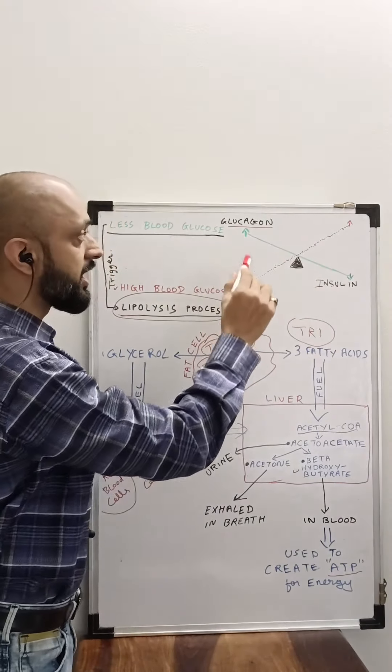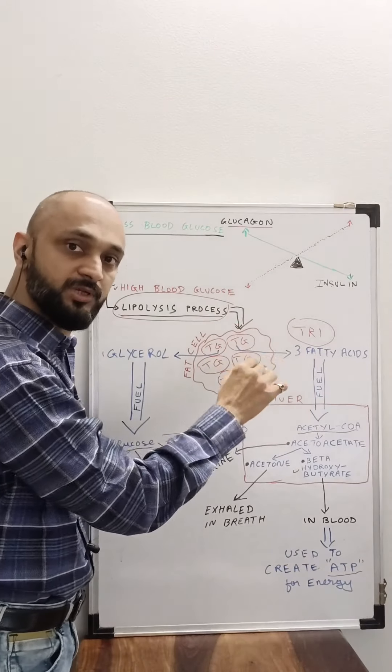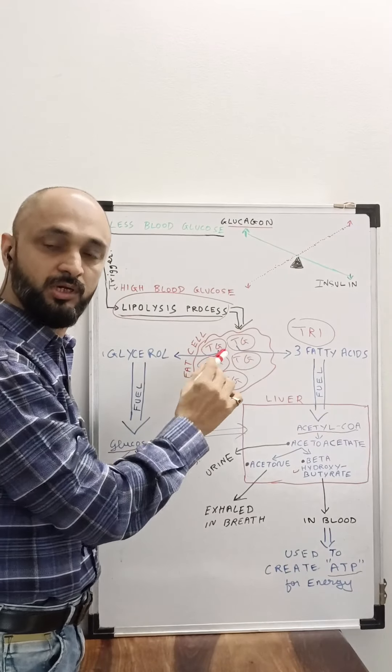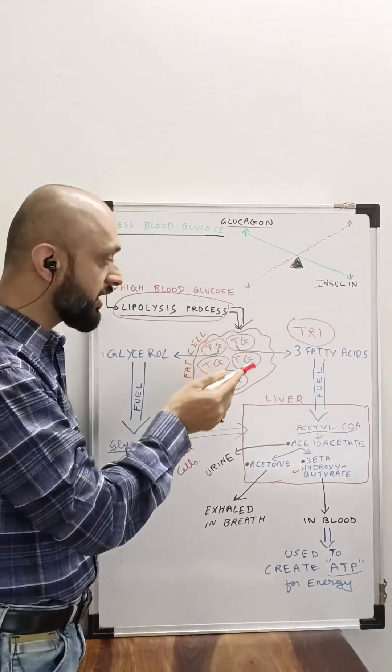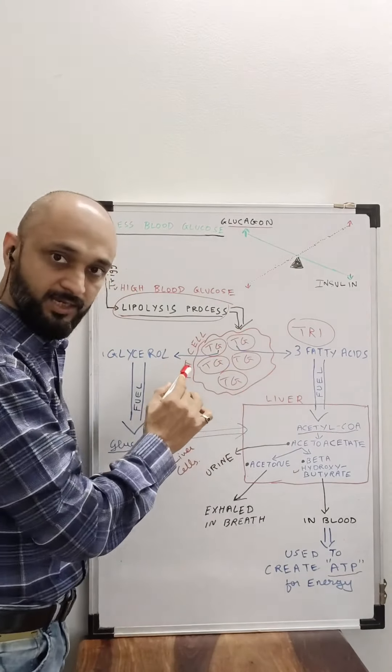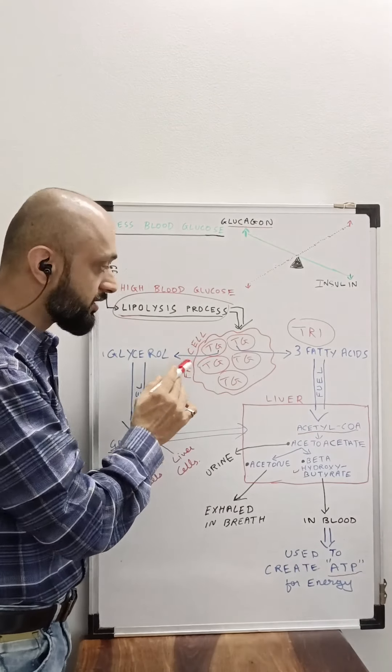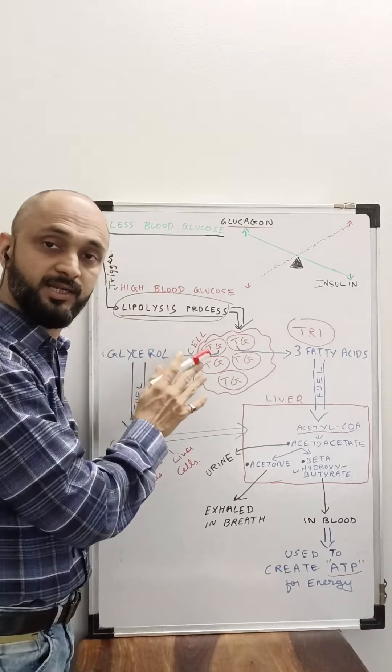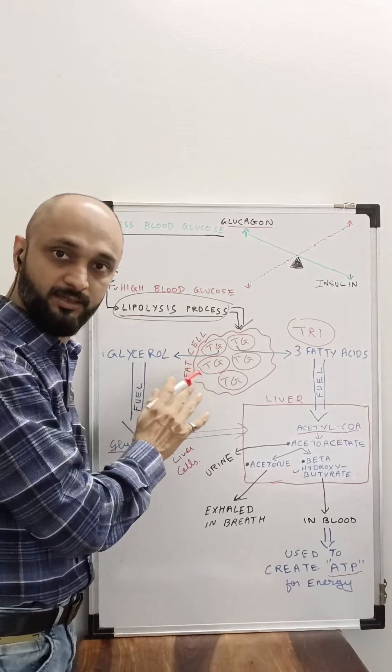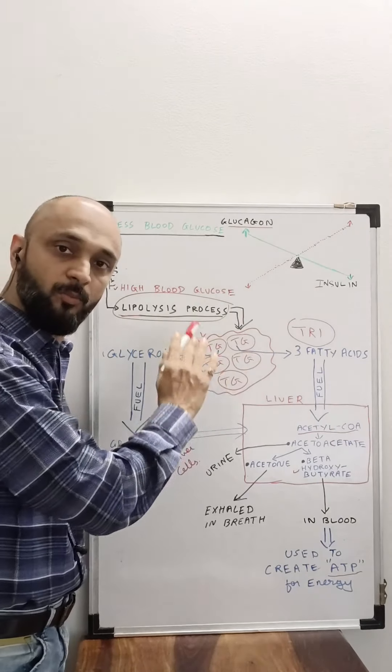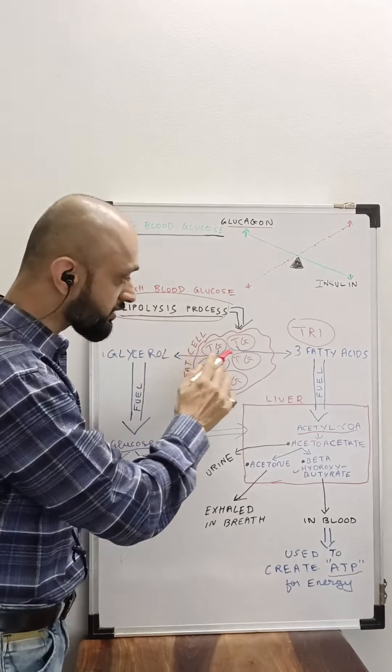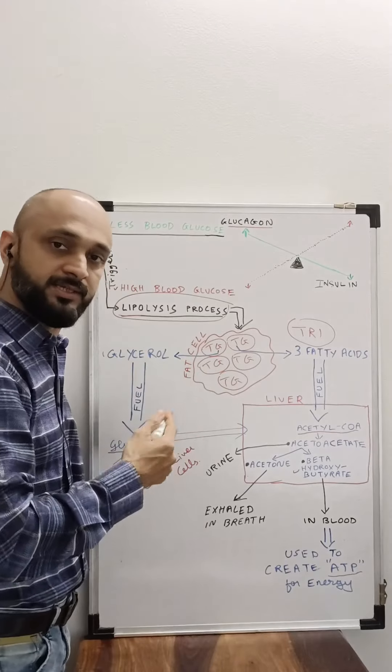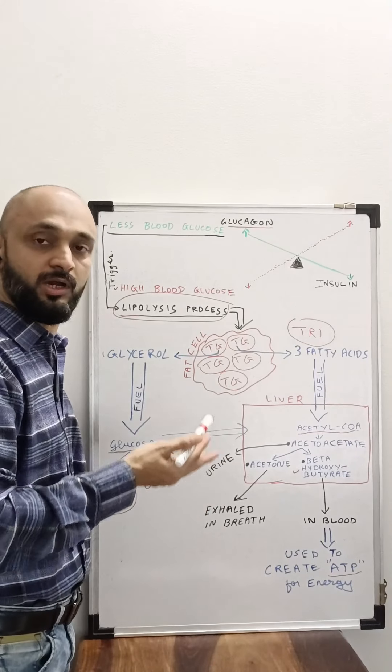As I have drawn this red line, this exact opposite scenario happens. Instead of using up the triglyceride, there is more production of triglycerides due to the high glucose level. This fat cell, this adipocyte, gets more triglycerides inside the cell and exactly opposite happens.